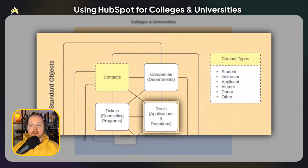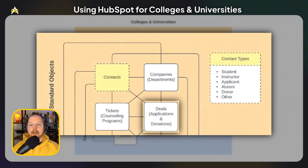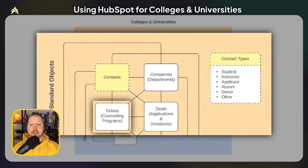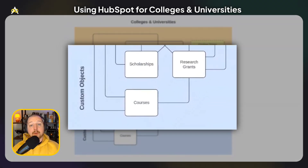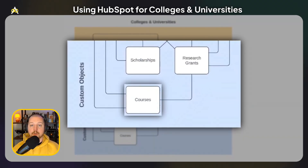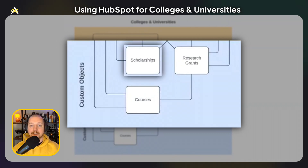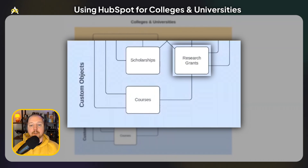Similarly, I've repurposed deals. Universities don't typically have a normal sales process, so I've created separate pipelines for applications and donations. HubSpot's tickets feature could easily be repurposed to track counseling programs like career counseling or academic counseling. I've also created three custom objects: courses will store information about classes that students take, scholarships will track financial aid that they receive, and research grants can store information on money that students or teachers get in order to do research.